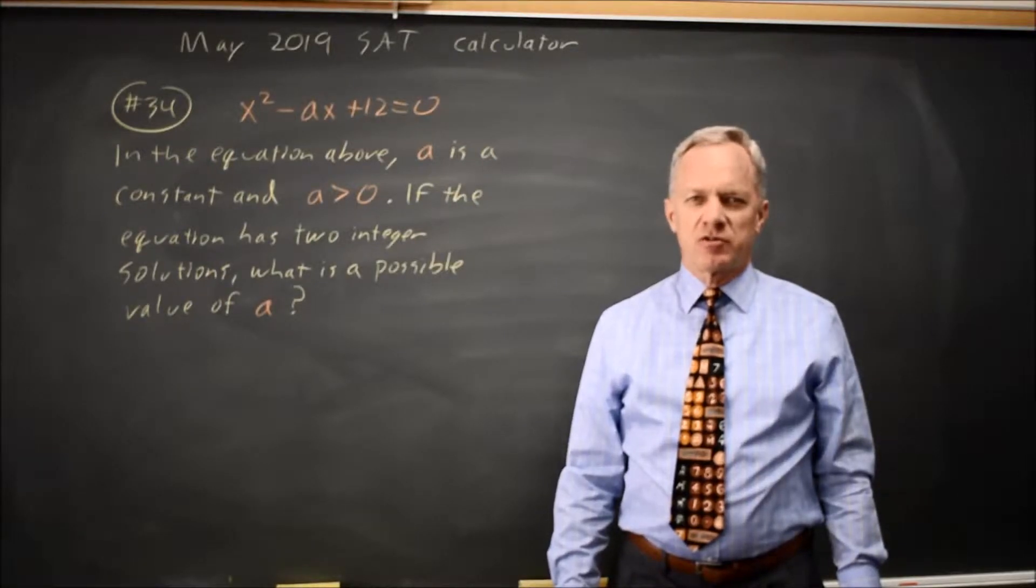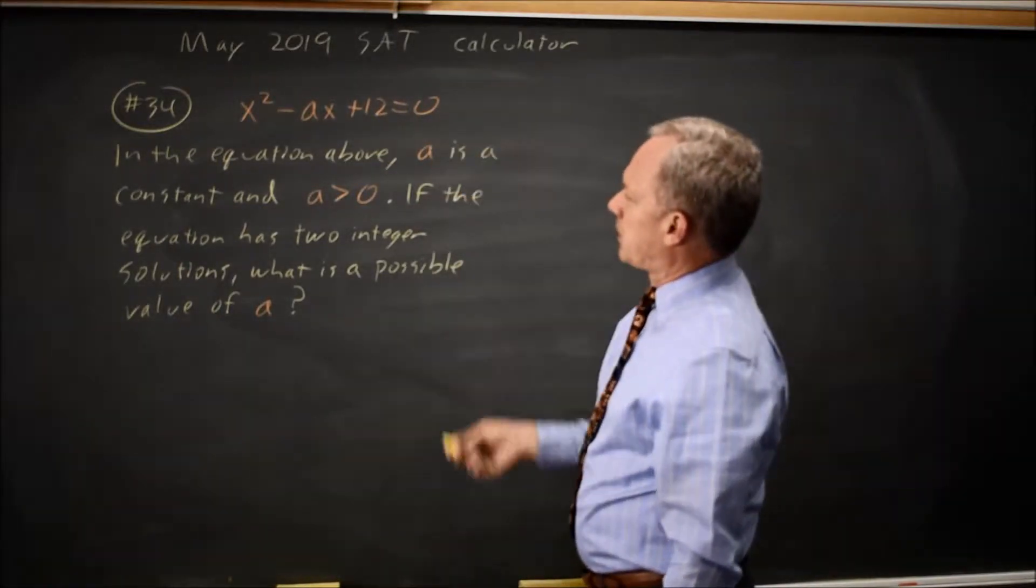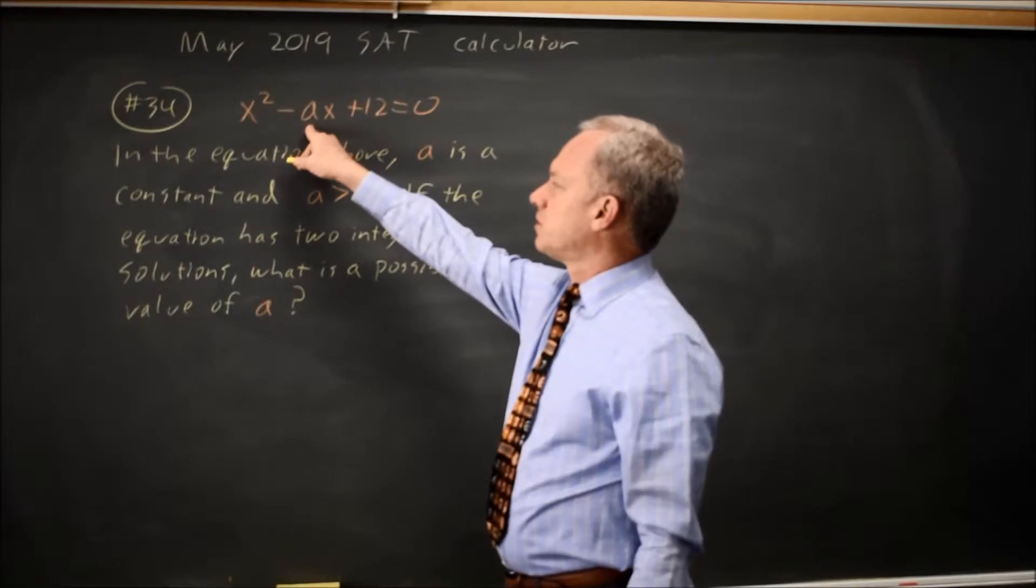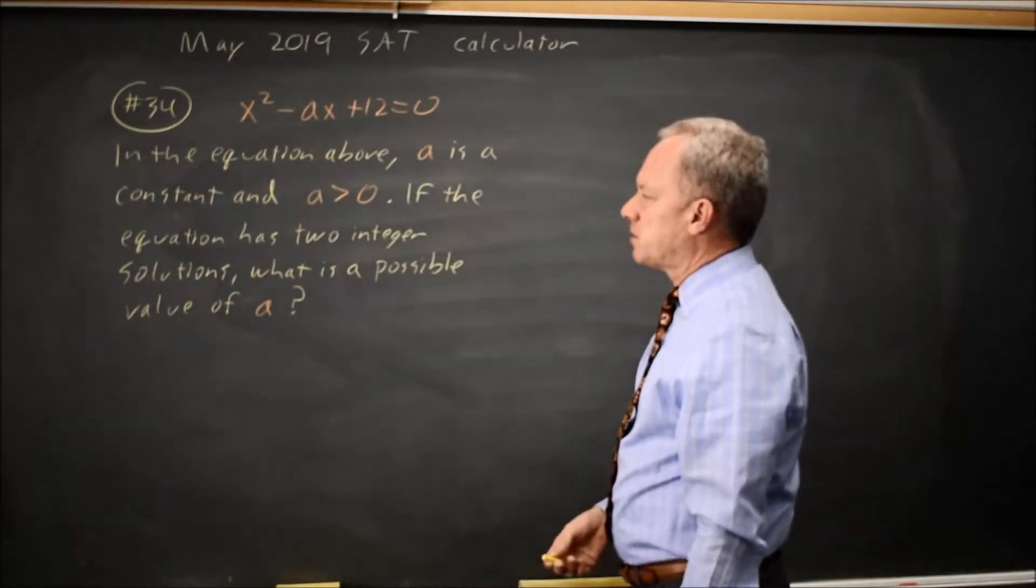This is Calculator Question 34 from the May 2019 International Exam. College Board gives us a quadratic where A, the negative of the X coefficient, is constant, and A is greater than 0.